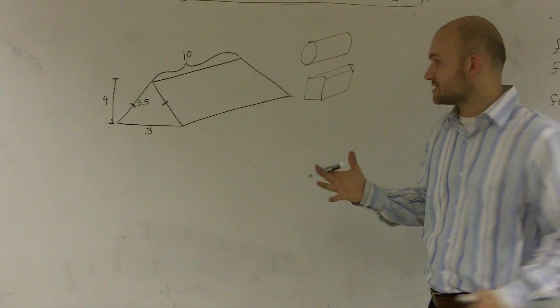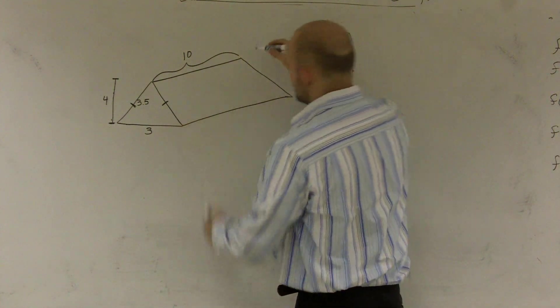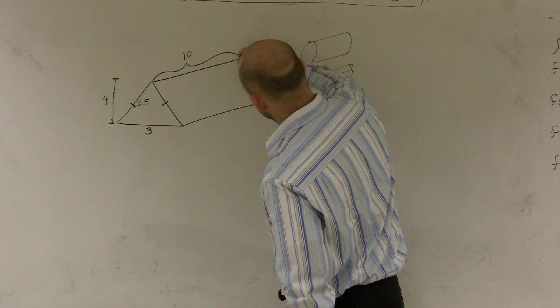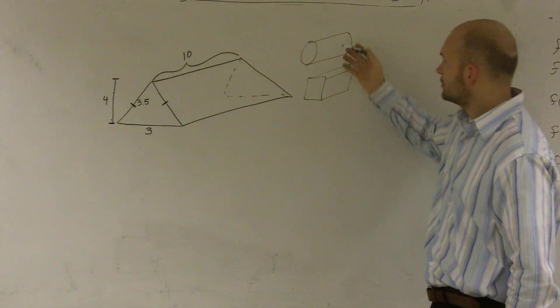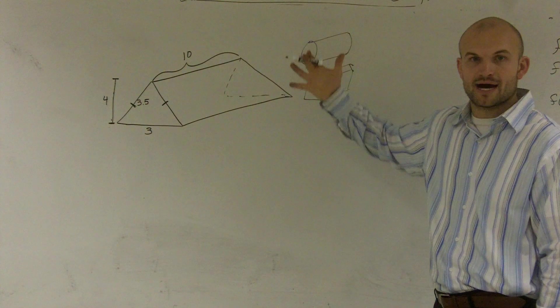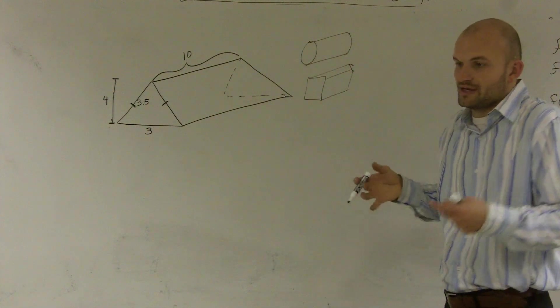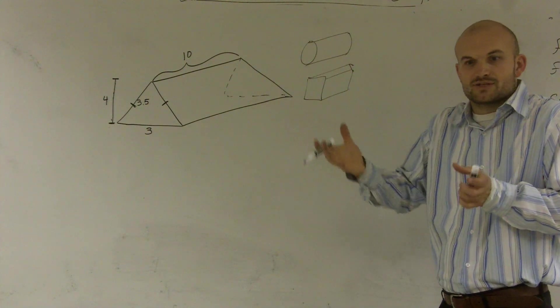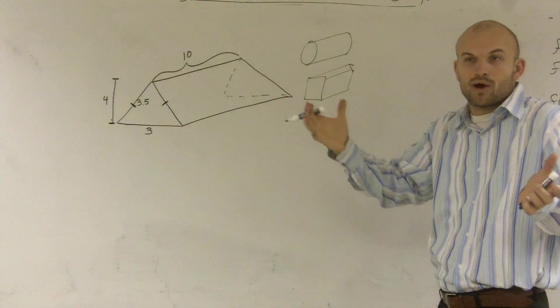One thing you notice about a prism is the base happens twice. You have two bases. You have it in the front and the back, top and the bottom. That's what we call a prism when you have your base replicated. You have the base twice.